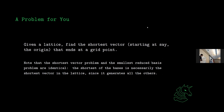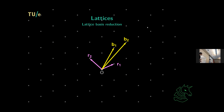Here's an interesting problem: given a lattice, we want to find the shortest vector in that lattice. I want you to guess the complexity of this problem. Big O is fine, NP-complete is fine — anything. Just guess how hard you think that problem is. It's basically: find the closest two points inside this lattice.